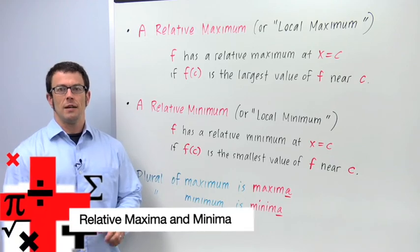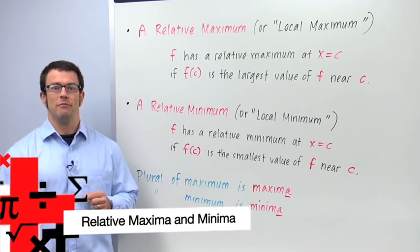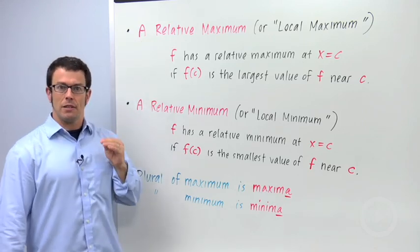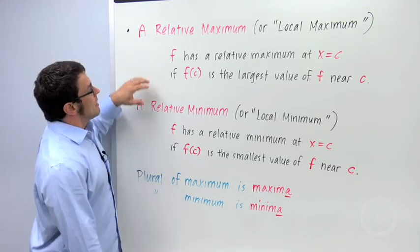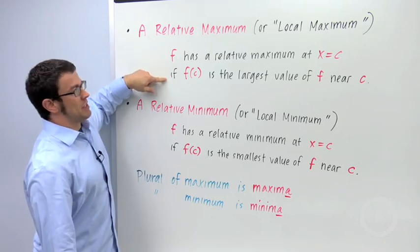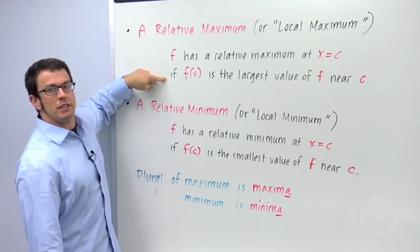I want to talk about two new concepts, relative maximum and relative minimum. Here are the definitions. A relative maximum is sometimes called a local maximum. f has a relative maximum at x equals c if f of c is the largest value of f near c.